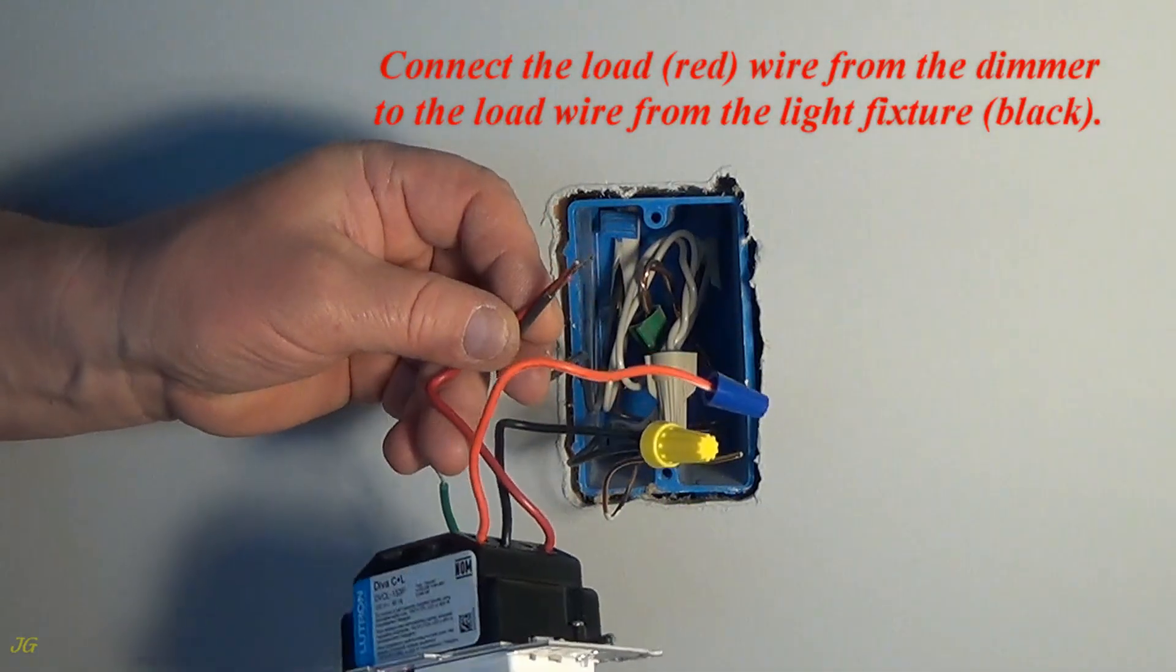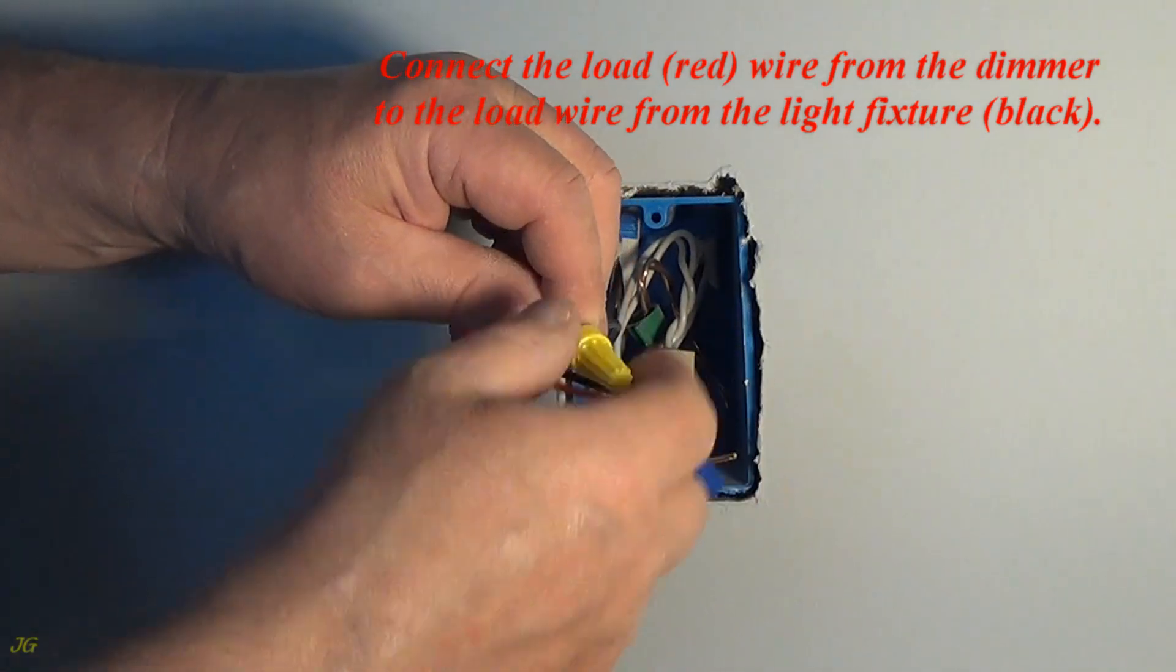Connect the load (red) wire from the dimmer to the load wire from the light fixture (black).